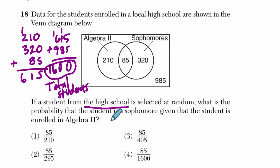So the probability that a student is a sophomore, okay, given that, so probability, I'm going to write this down, they're a sophomore, given that they are already enrolled in algebra 2.